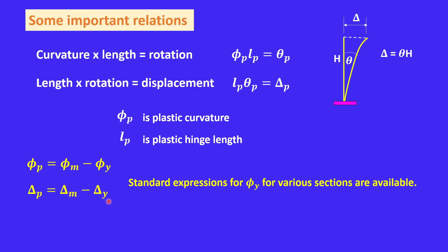Standard expressions for yield curvature phi-y are available depending on whether the section is a beam or column, circular or rectangular. The maximum curvature phi-m is governed by material properties and also has standard expressions available. From these, the plastic curvature phi-p and plastic displacement delta-p can be calculated.